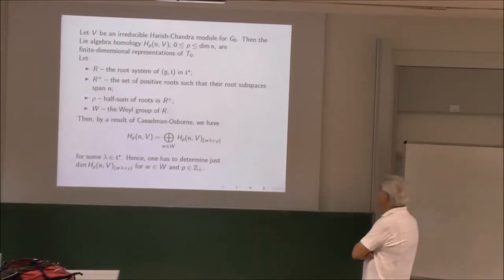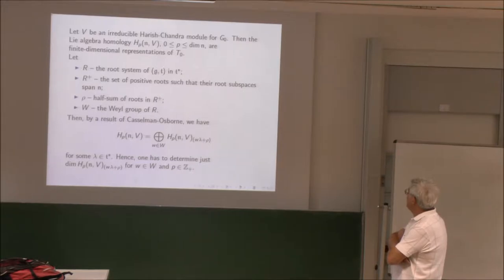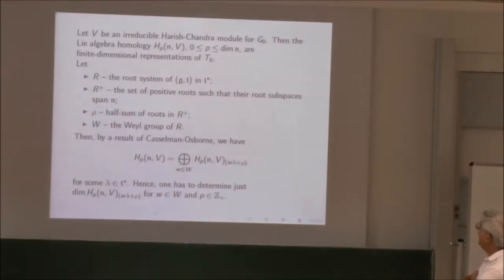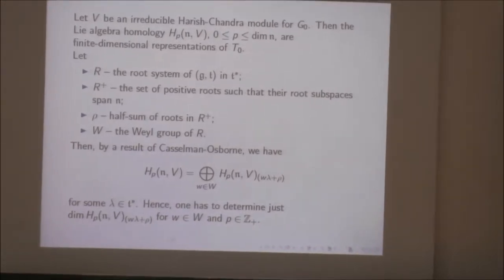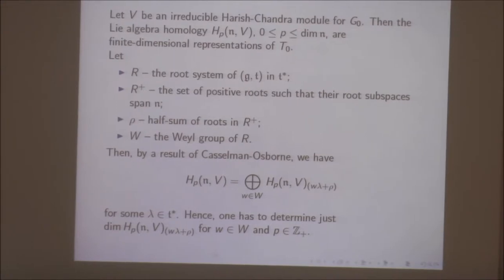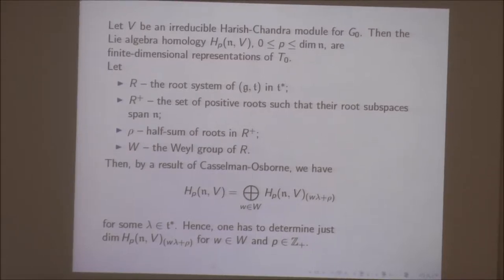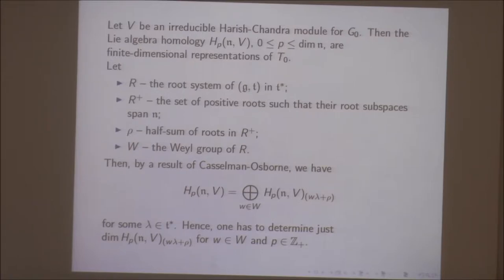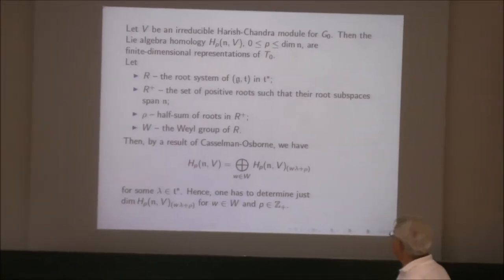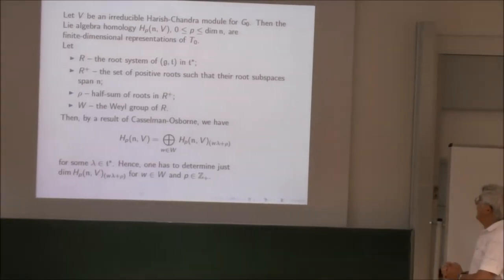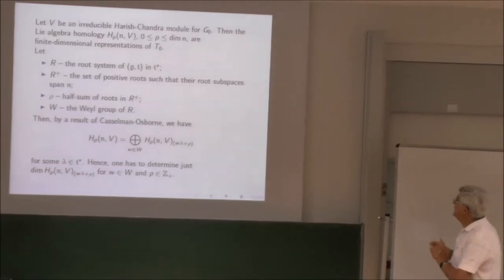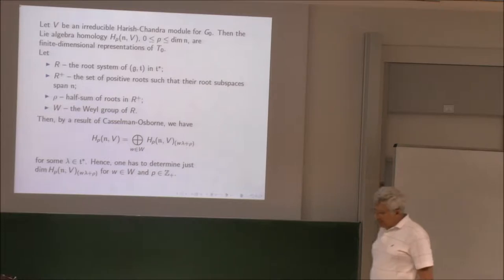If I have an irreducible Harish-Chandra module for G-naught — introduced and described by both — then for that N I can compute the corresponding Lie algebra homology. In each degree from 0 to the dimension of N, I get a vector space on which T-naught acts, so this is a representation of T-naught. These representations are finite dimensional — this requires proof, of course — and the proof comes out in a few minutes from the geometric interpretation.